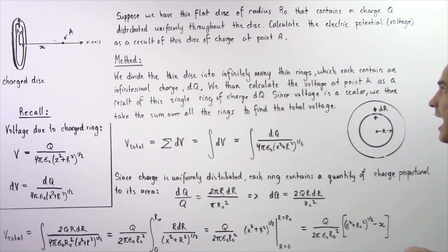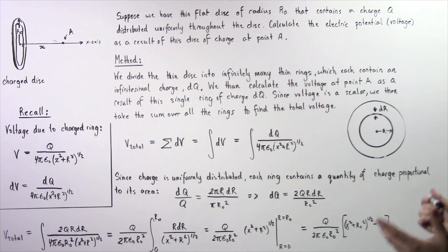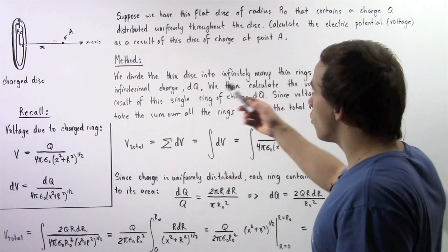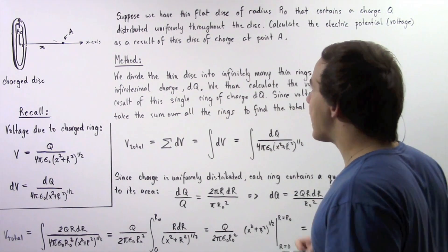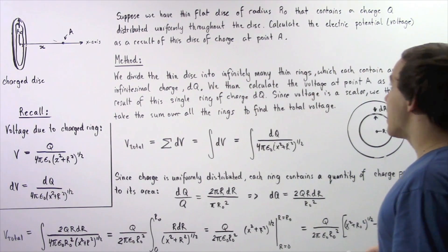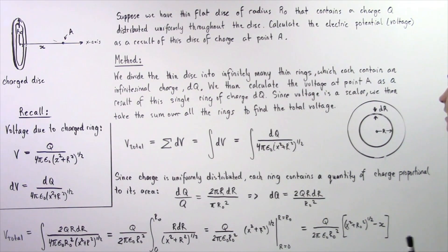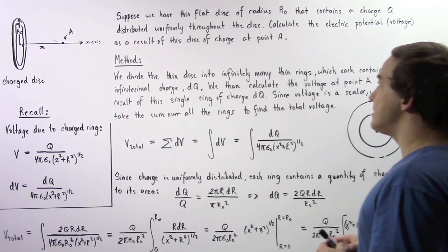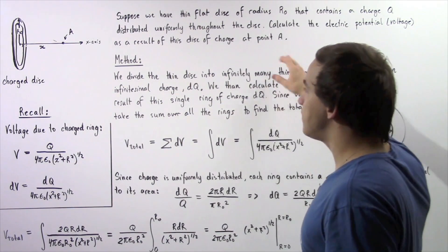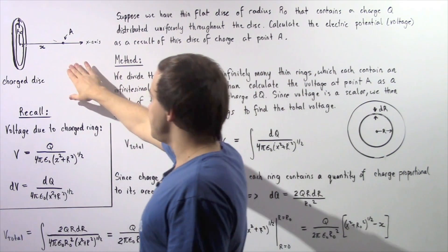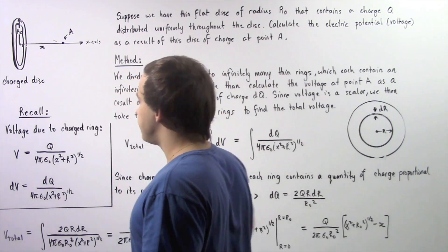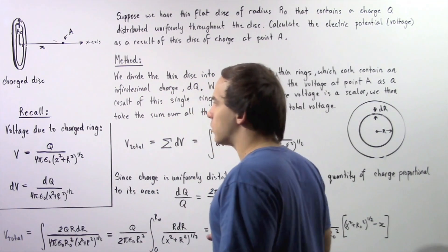Suppose we have a thin flat disk of radius R0 that contains a charge Q distributed uniformly throughout the disk. We want to calculate the electric potential, the voltage as a result of this disk of charge at point A. So let's begin by looking at the following diagram.